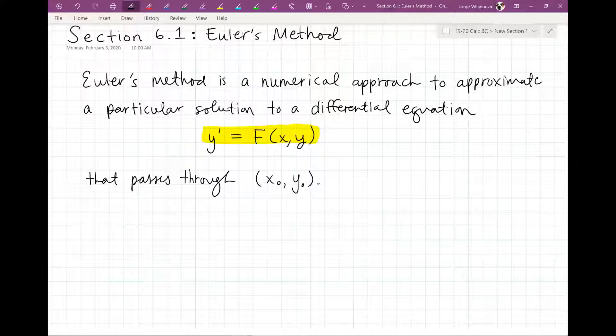From this information, you know that the graph of the solution passes through the point x sub 0, y sub 0, and it has a slope of F(x,y). This gives us a starting point. We know a point to start from and a slope to follow.